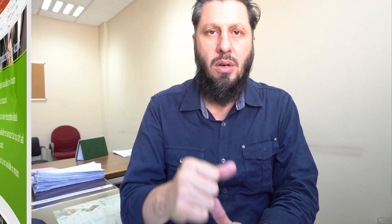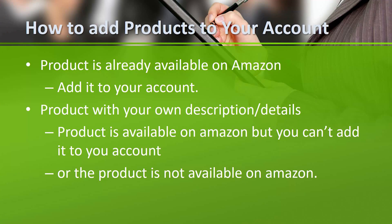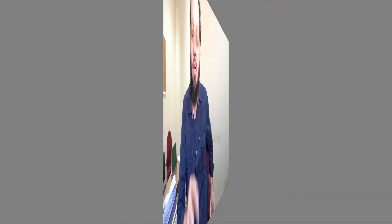There are two ways to add products to your account. I'll explain both ways one by one. I suggest you, before adding any product to your seller account, search for the product on Amazon. If it is already available on Amazon, then it's going to be easy for you — adding an existing product to your account is much easier than adding it from scratch.